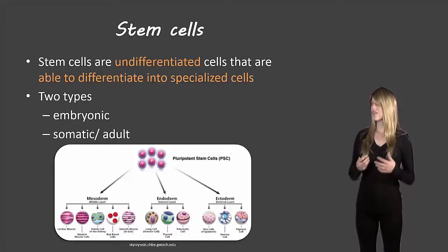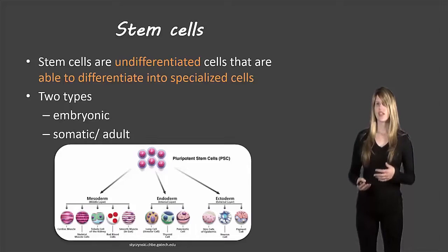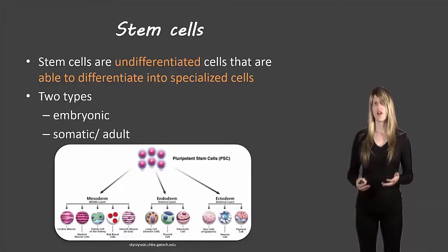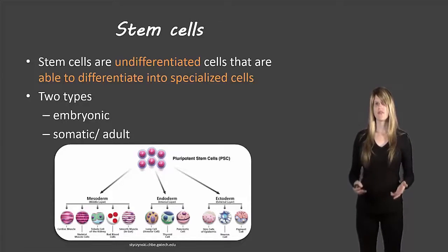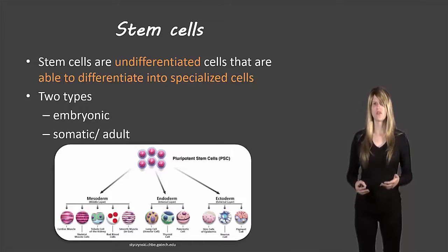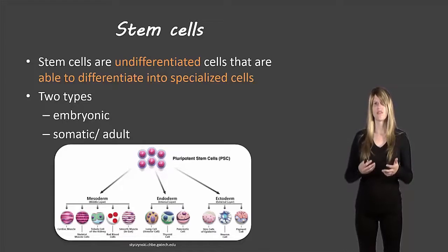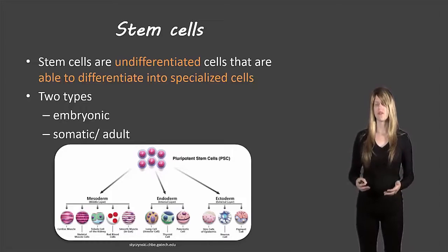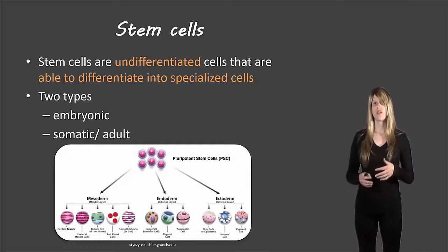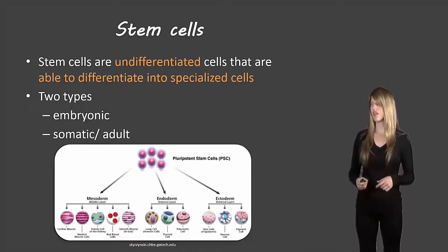Stem cells are undifferentiated cells that are able to differentiate into other types of specialized cells. Hopefully you've already watched the video on cellular differentiation and know that differentiated cells have specific roles in the body, specific appearances, and specific abilities to perform those roles. Stem cells can turn into many different types of cells, depending on the type of stem cell.